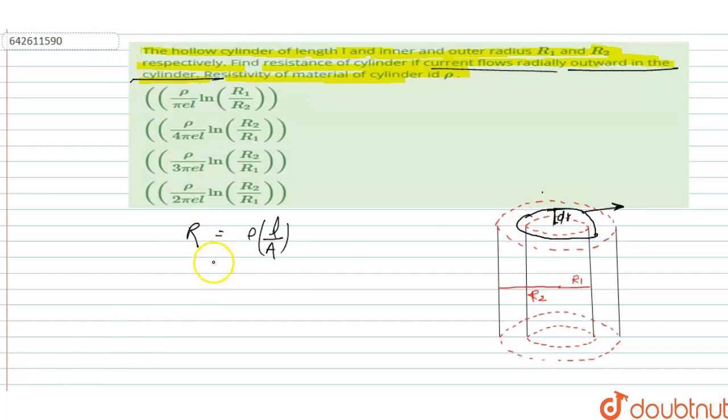Then at this elemental length dr, total resistance is equal to dR. And this is equal to rho, rho is constant for the resistivity of the material of the cylinder. And the length, because in this question the electric field is radially outward direction, the length is only dr.